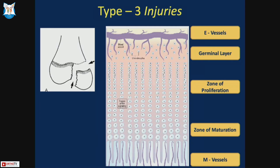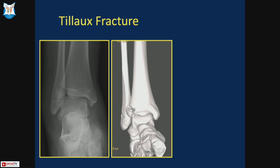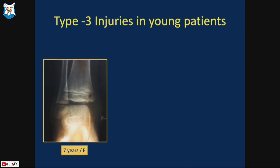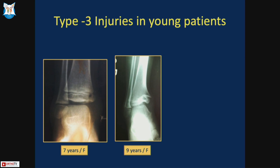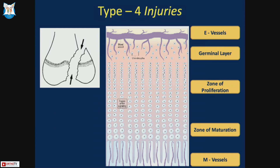In Type 3 injuries, the fracture line propagates from the growth plate all the way through the epiphysis. These injuries occur in children who are near the end of growth, where part of the physis is already undergoing physiologic epiphysiodesis, so the fracture propagates through the epiphysis. The E vessels are injured, resulting in a higher rate of growth arrest. Tillaux fracture is a common example, fortunately occurring near skeletal maturity. However, in younger children — such as a seven-year-old with Type 3 medial malleolus fracture — follow-up at nine years showed physeal arrest and ankle varus deformity.